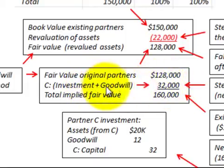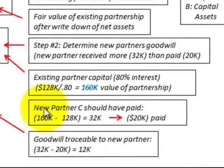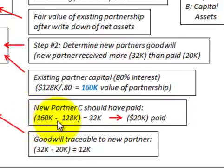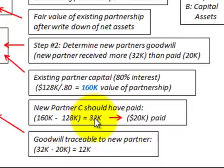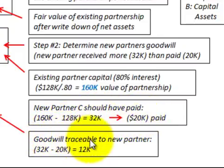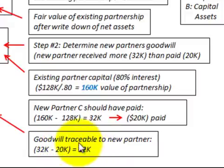That $32,000 for Partner C includes both their investment plus goodwill. New Partner C should have paid $32,000 to enter the partnership — that's the total implied fair value of $160,000 minus the existing partners' revalued amount of $128,000 — but they only paid $20,000. So there's goodwill involved; they receive more than what they paid. The goodwill is traceable to the new partner: $32,000 received less $20,000 paid equals $12,000 of goodwill.